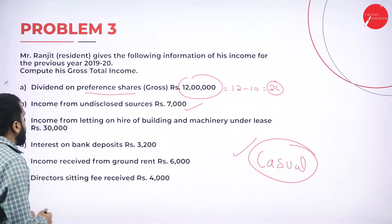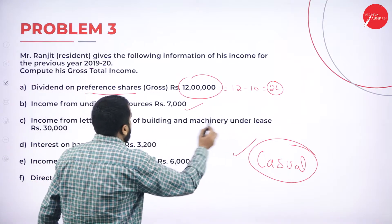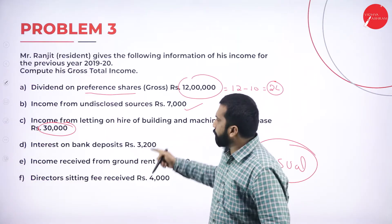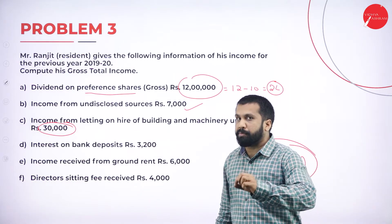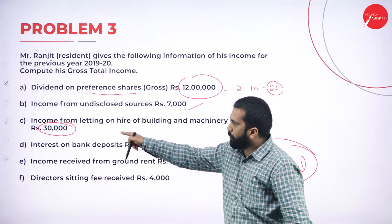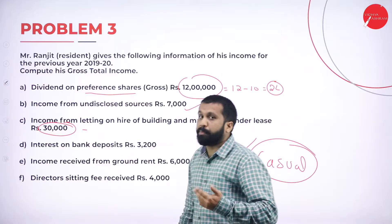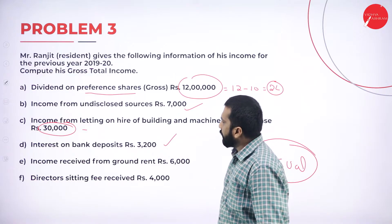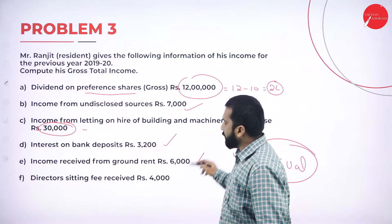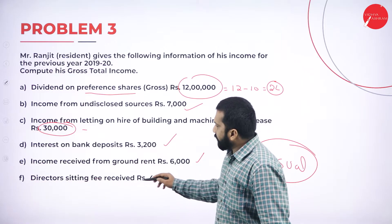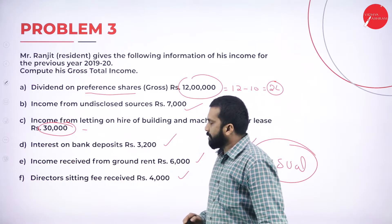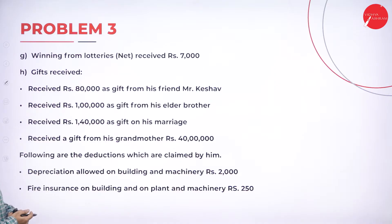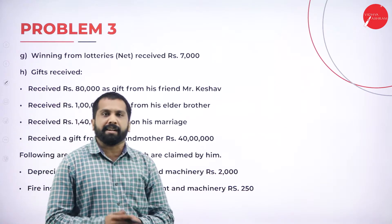Income from undisclosed sources is fully taxable. Income from letting hire of building and machinery under lease — 30,000 is taxable, but we have to check for adjustments at the end; whatever adjustments are given, we must deduct. Next, interest on bank deposit is taxable. Then income received from ground rent is taxable. Then director sitting fees received — it is completely taxable.